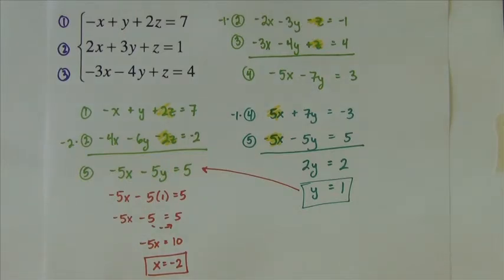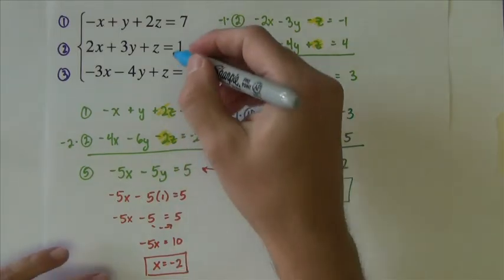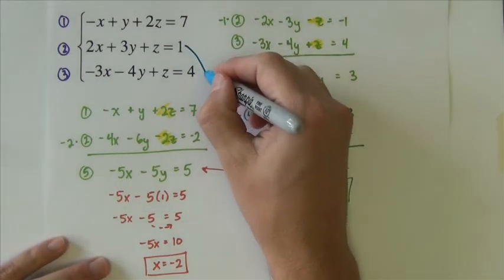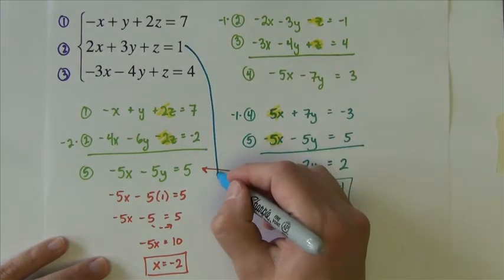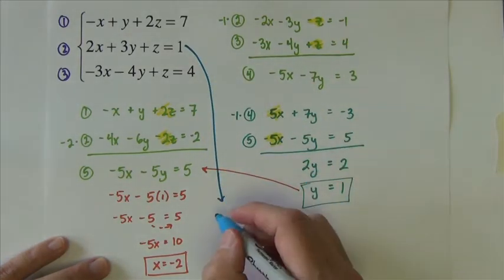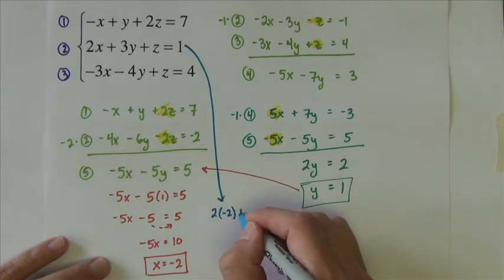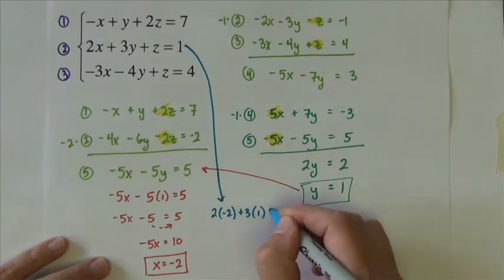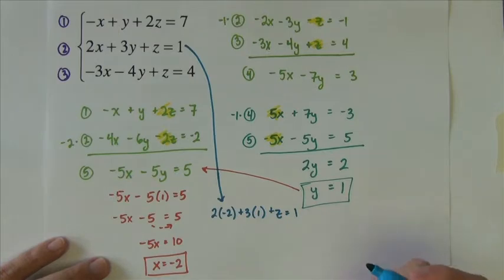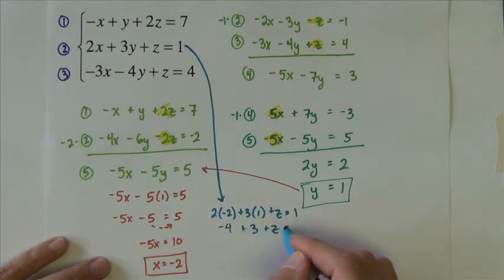And I need to find the z. And so to find the z, why don't I take this equation. So I'm going to have 2 times the x plus 3 times the y plus z equals 1. So that's negative 4 plus 3 plus z equals 1. So z equals 2.